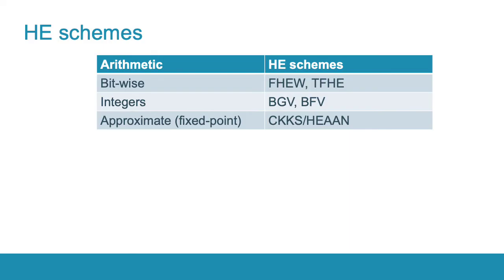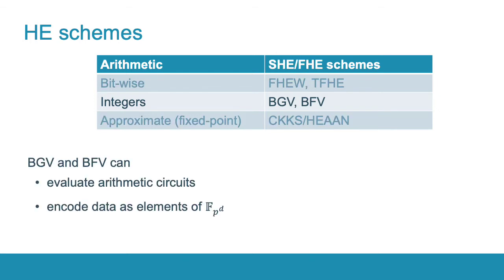Let us provide more details on somewhat homomorphic encryption schemes we are going to use. There are three main types of HE schemes. The first type is suitable for bitwise arithmetic and includes FHEW and TFHE. The second type is efficient for integer arithmetic; the most well-known schemes are BGV and BFV. The third and youngest type is suitable for approximate or fixed-point arithmetic—currently it contains only CKKS or HEAAN. In this work we focus on the second type that can evaluate arithmetic circuits and encode data into finite fields.